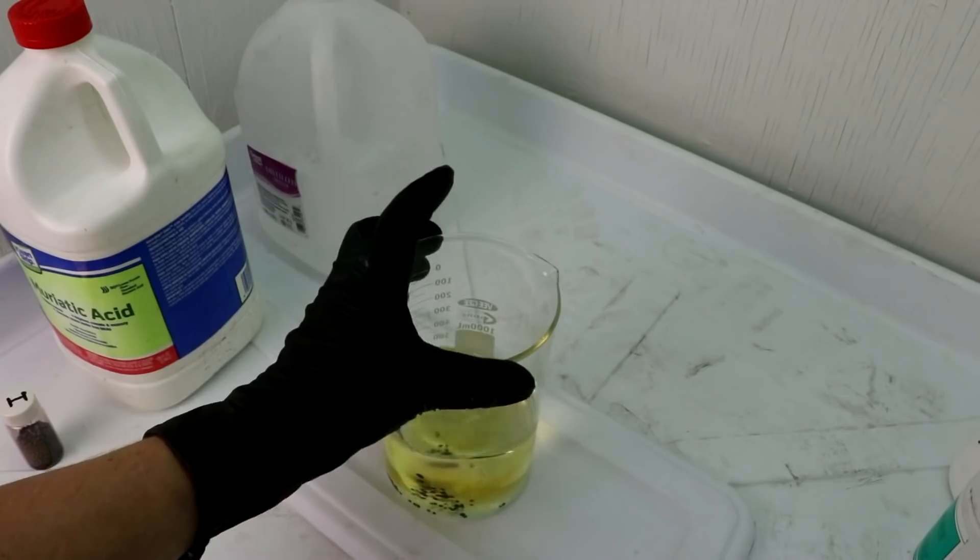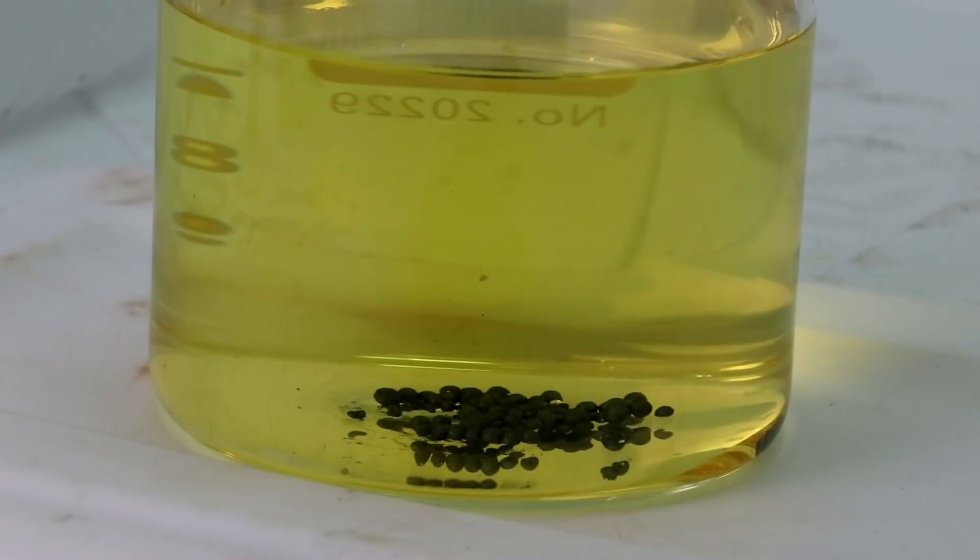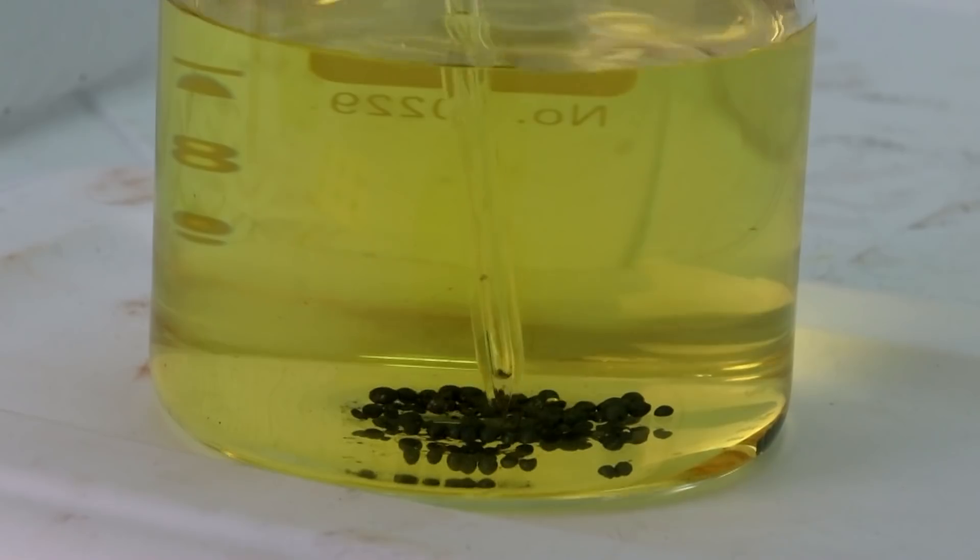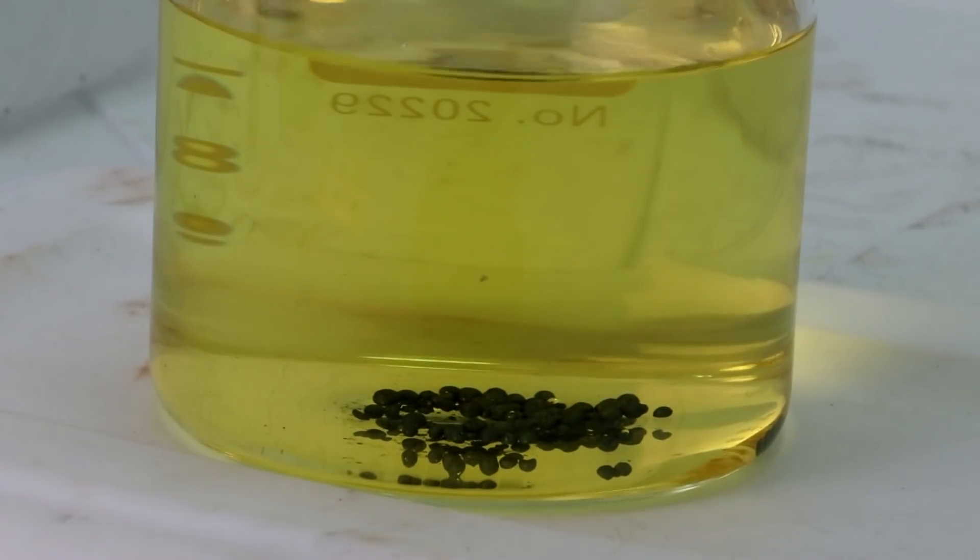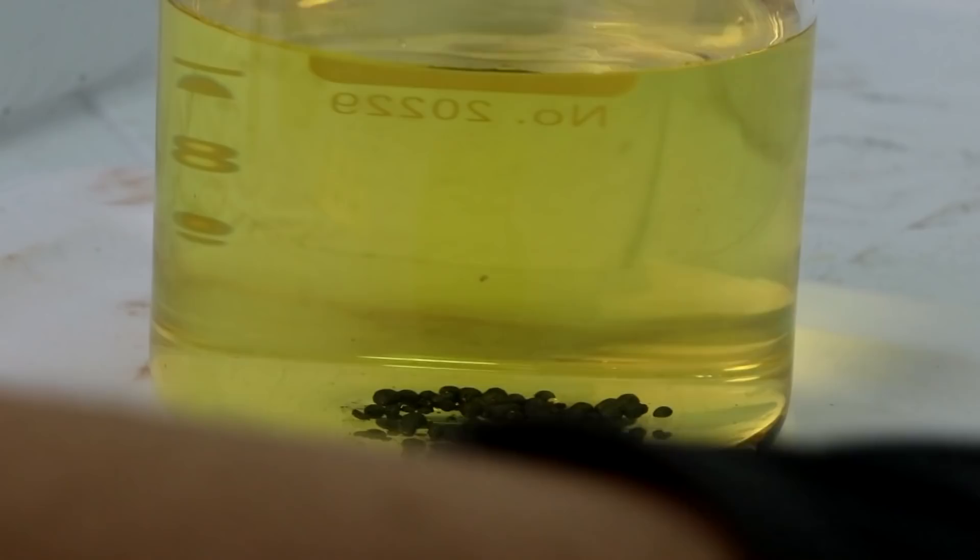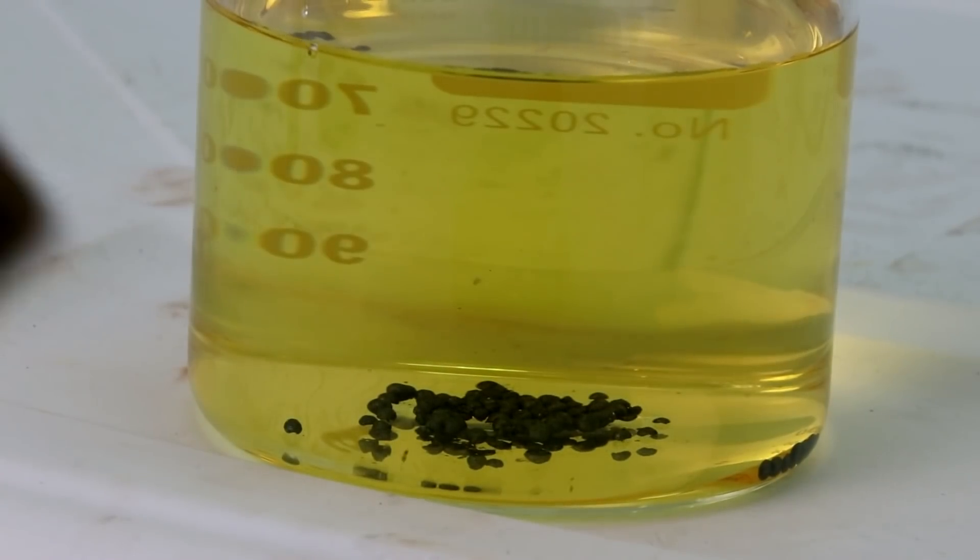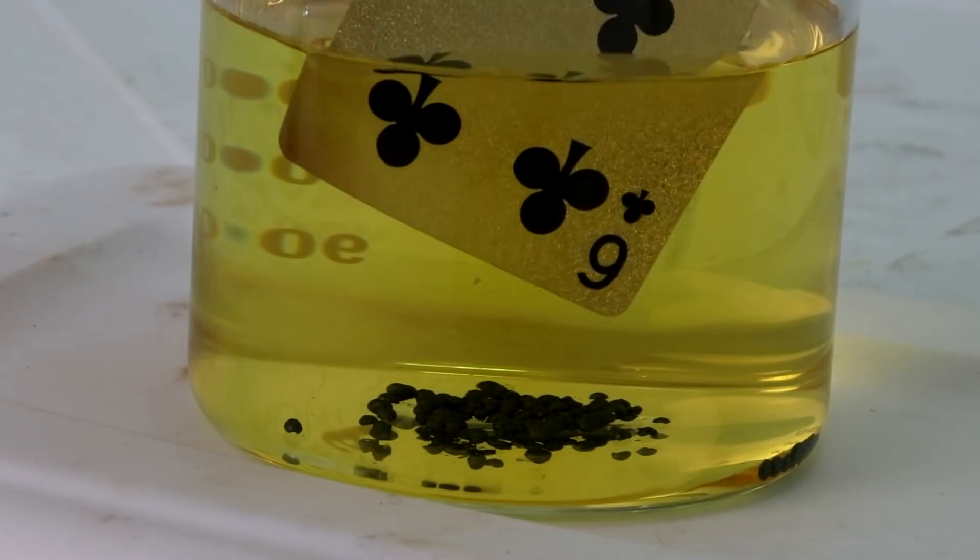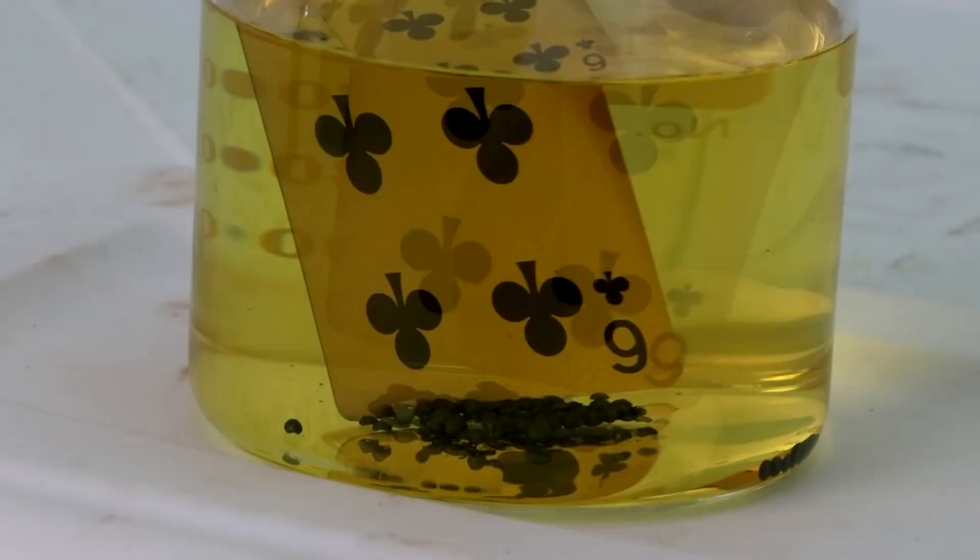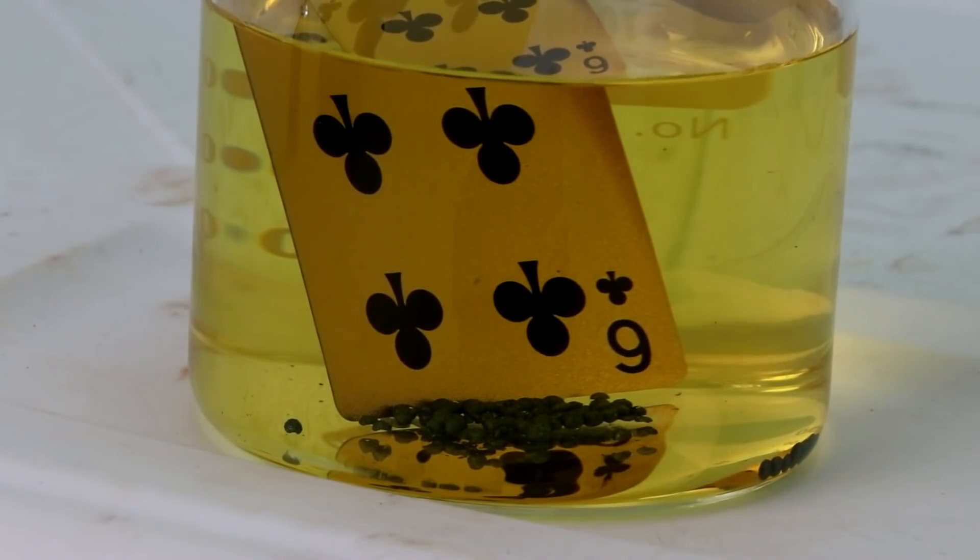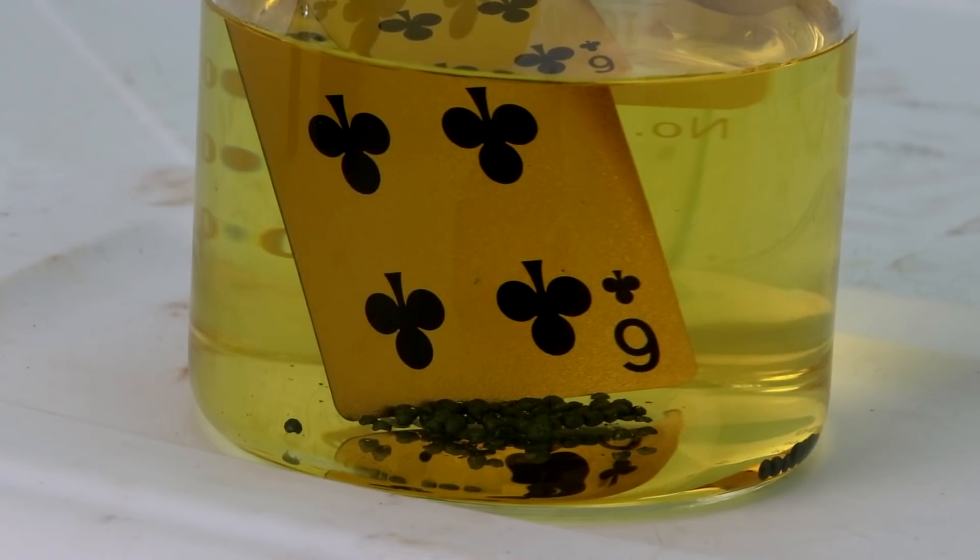There we go. Might need to get a stir rod to stir that up. Looks like it'll take a little while for the iodine to dissolve because it's in solid prills. It shouldn't really matter too much. Okay, let's take one of these cards and stick it in here and see if it'll actually work to dissolve the gold off of it. All right, I'm going to leave it like that for a little while. I'm actually going to go run down to the store. I've got a time-lapse camera going so see you guys in a bit.